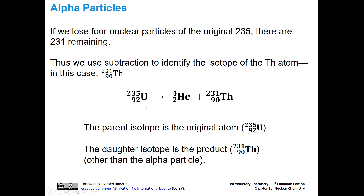The uranium-235 isotope is called the parent isotope — that's always essentially our reactant, the original atom. The daughter isotope is the product in addition to our alpha particle — so we call this product isotope the daughter isotope.